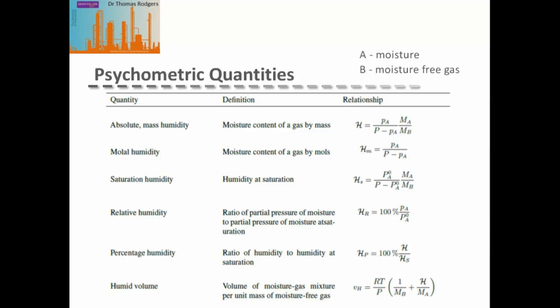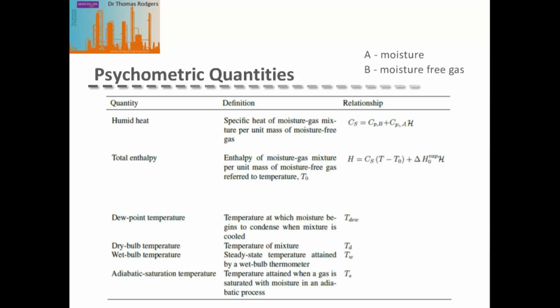The humid volume is the volume of the moisture-gas mixture per unit mass of moisture-free gas, based on the ideal gas law modified by the humidity. The humid heat is the specific heat capacity of the moisture-gas mixture per unit mass of moisture-free gas, taken as the specific heat capacity of the moisture-free gas plus the specific heat capacity of the moisture multiplied by the humidity.